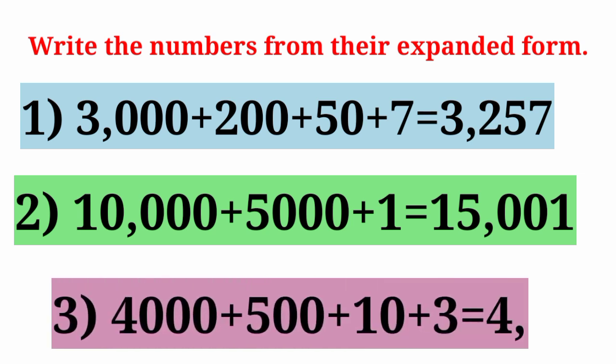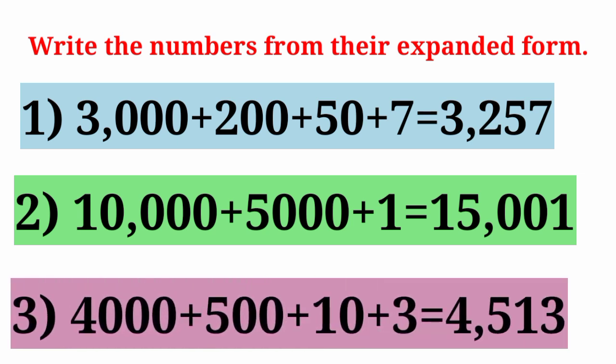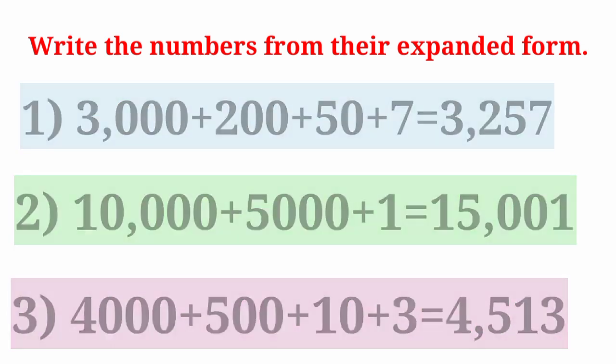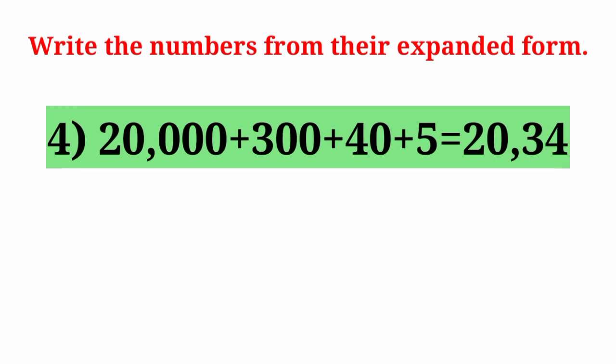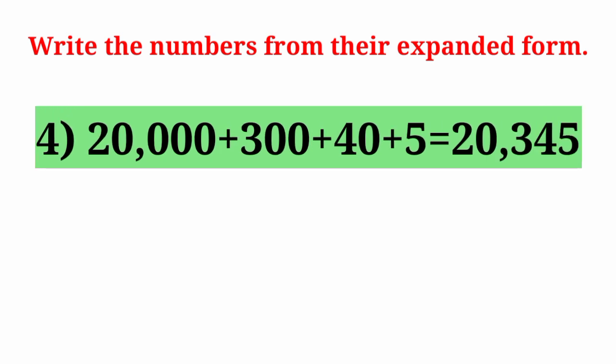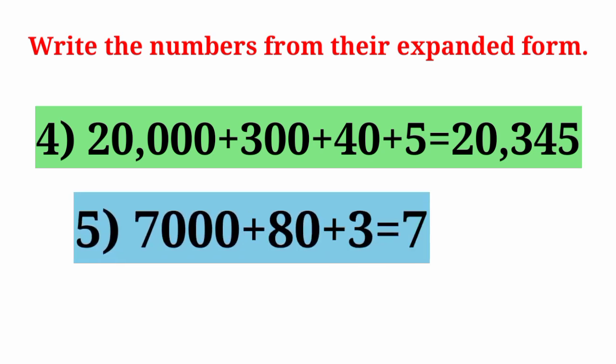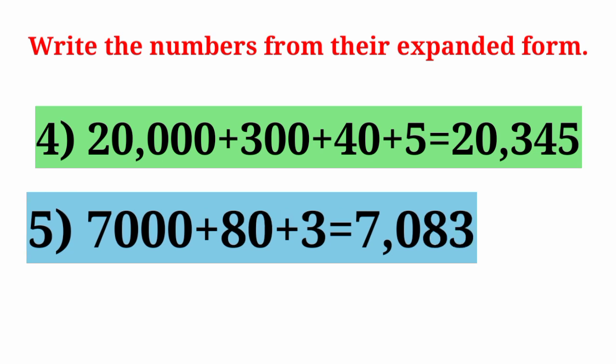Next: 4,000 plus 500 plus 10 plus 3. Number will be 4,513. Next expanded form is 20,000 plus 300 plus 40 plus 5. Number will be 20,345. Next expanded form is 7,000 plus 80 plus 3. Number will be 7,083.